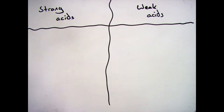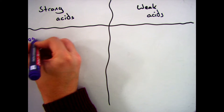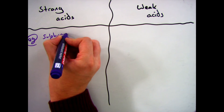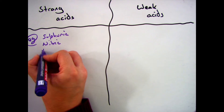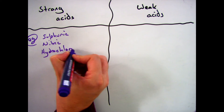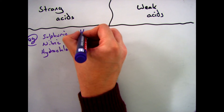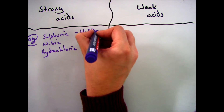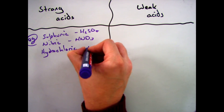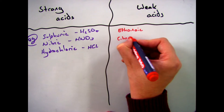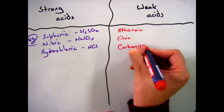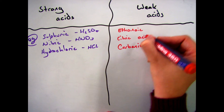Hi guys, welcome to this video looking at the difference between strong and weak acids. If you think of a strong acid, think sulfuric, nitric, or hydrochloric acid. If you think of a weak acid, think citric, ethanoic, and carbonic acid.